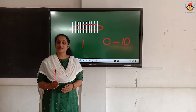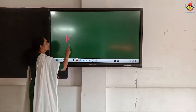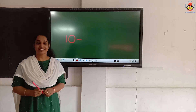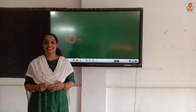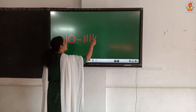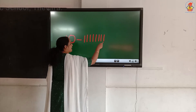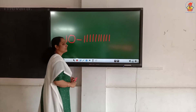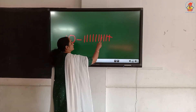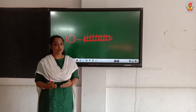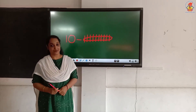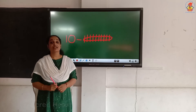Did you understand? Miss will show you once more. Which number is this? Number ten. Shall we draw a bundle for number ten? Yes. For that, how many lines should I draw? Ten. One, two, three, four, five, six, seven, eight, nine, ten. Next, I have to make it into one bundle. Do I have to draw any singles? No. So one ten and zero singles means number ten.